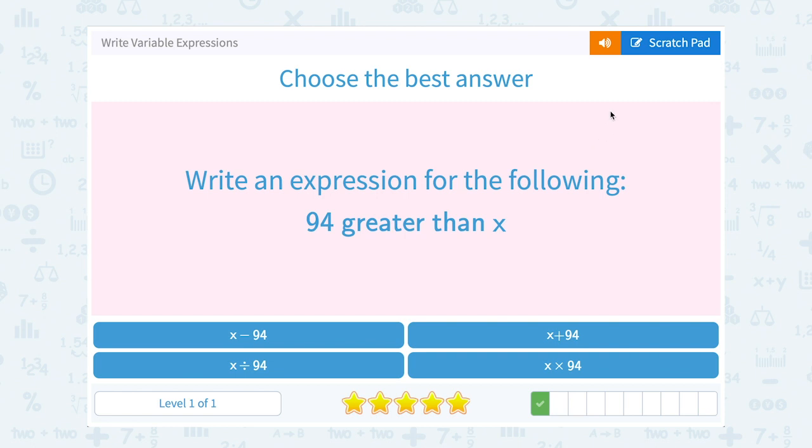94 greater than x. Well, greater than x means we'd have to add it onto x. So this one should be x plus 94.